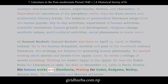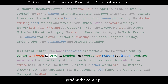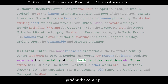His famous works are Eleutheria, Waiting for Godot, Endgame, Malloy, Malone Dies, The Unnamable, and Messia at Camea. B. Harold Pinter, the most renowned dramatist of the 20th century, was born in 1930 in London. His works are famous for human realities, especially the uncertainty of birth, death, troubles, and conditions. Pinter wrote his first play, The Room, in 1957.